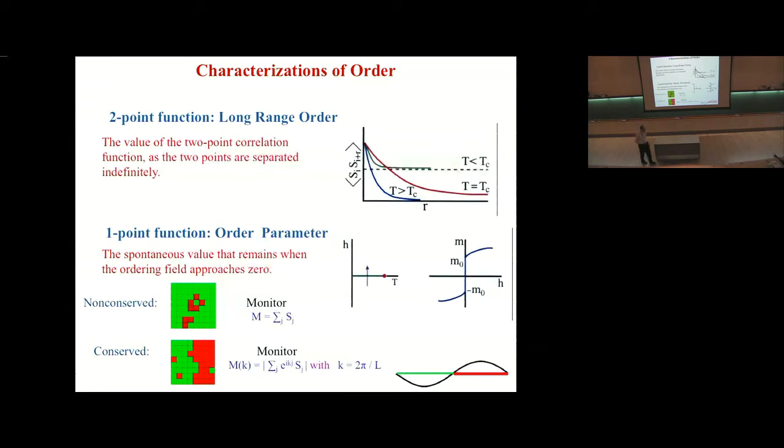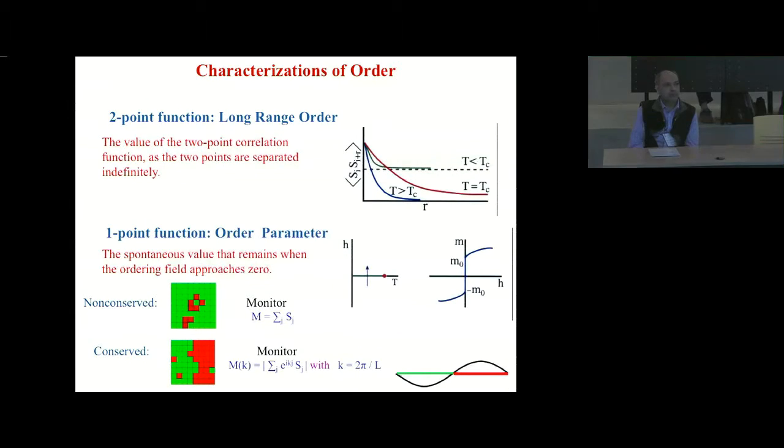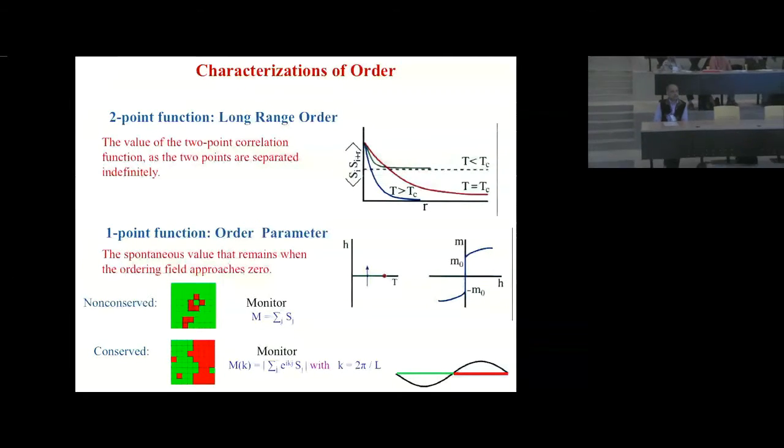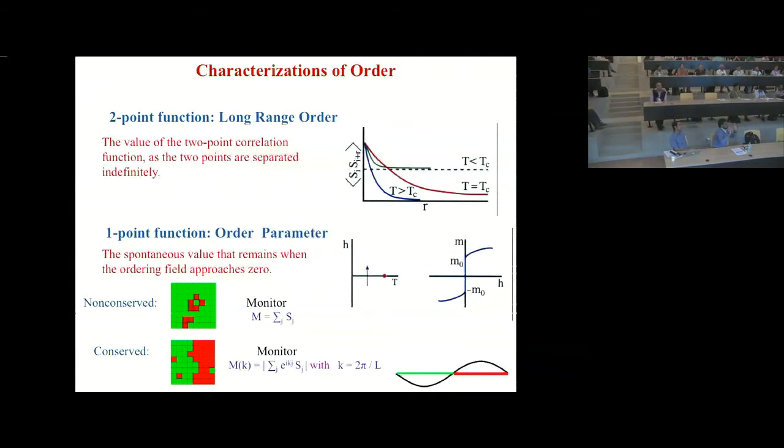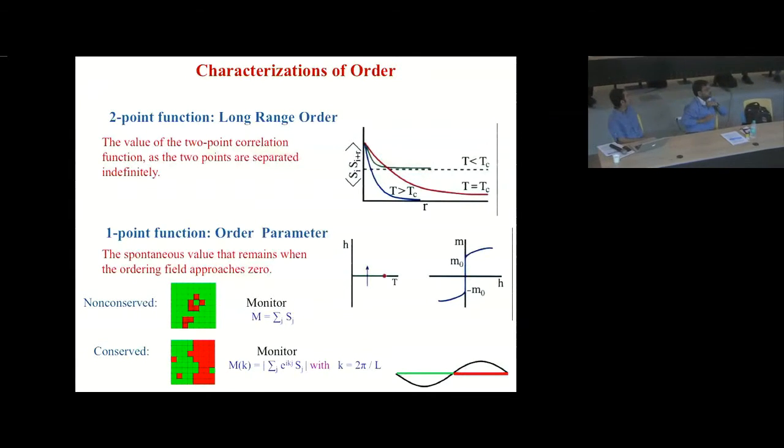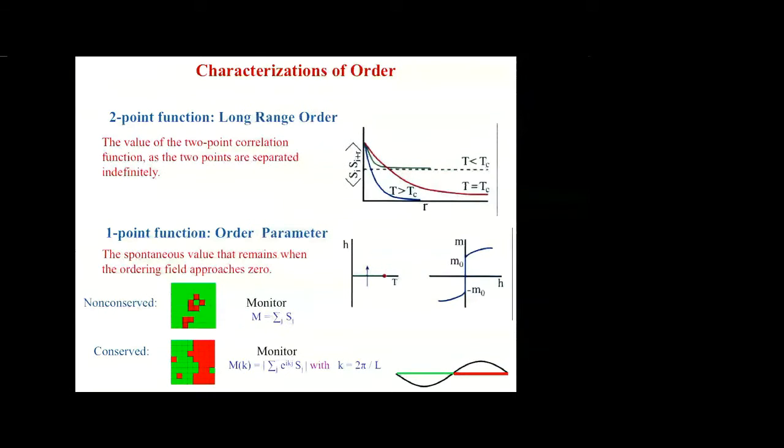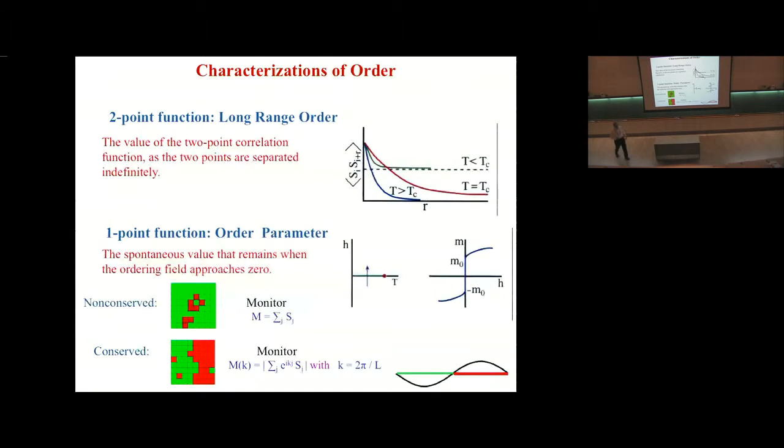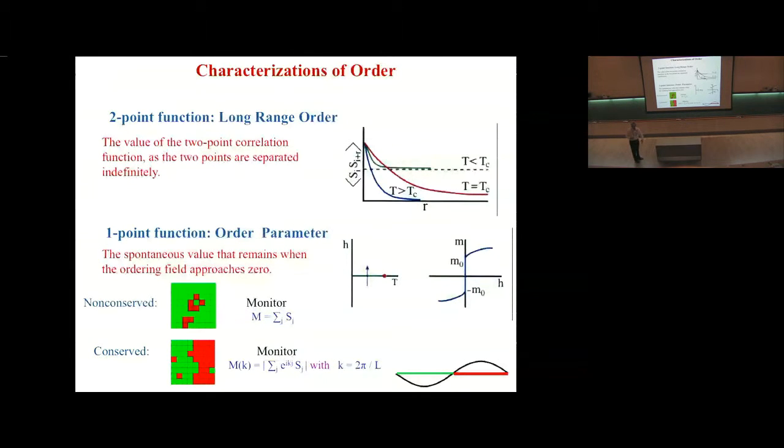On the other hand, you don't need to look at a two-point function, you can look at a one-point function. The one-point function is just the order parameter, and most commonly, you think of it as the value that remains when the ordering field goes to zero. If you have a system with a conserved number of spins, then the order shows itself in phase separation, and the way you could catch the order is to look at the first Fourier mode of the magnetization.